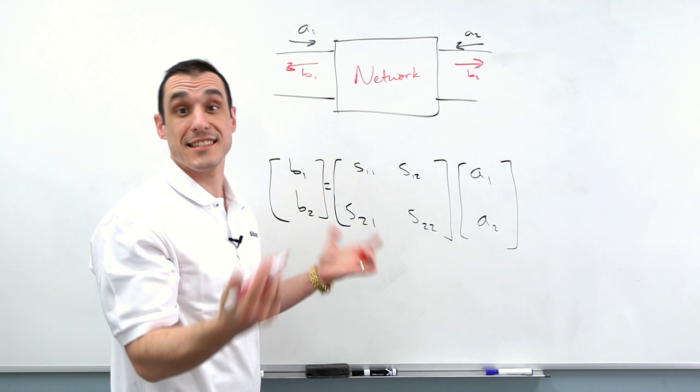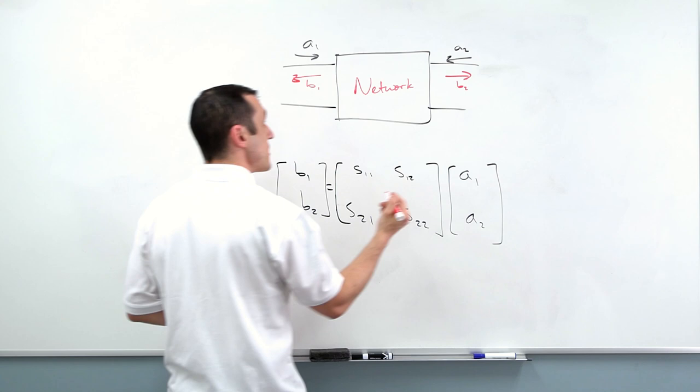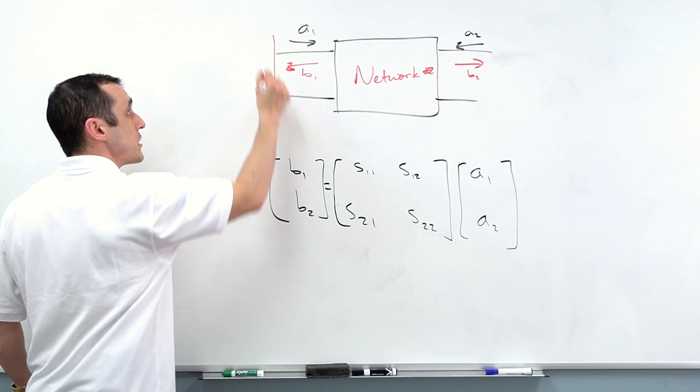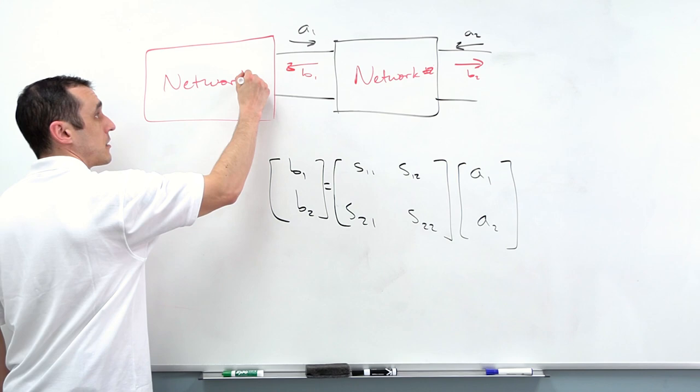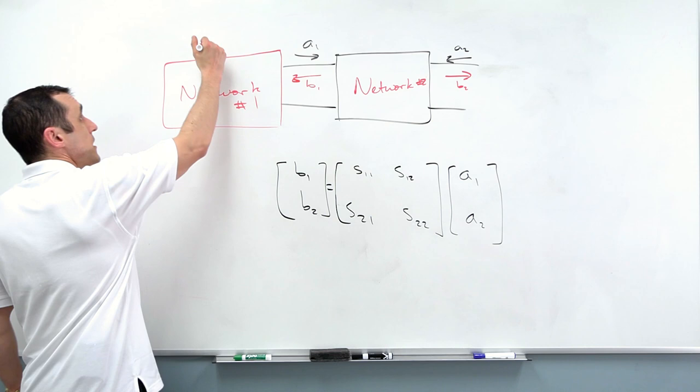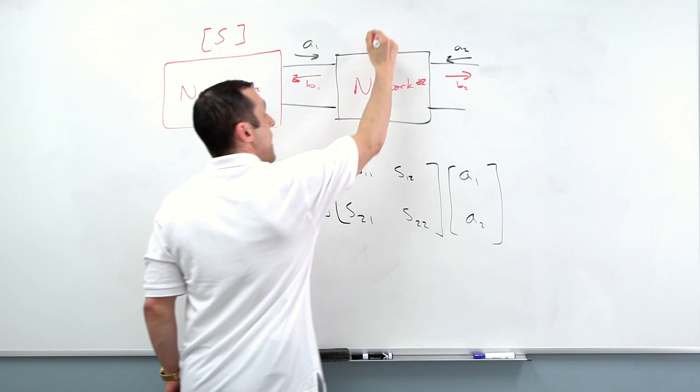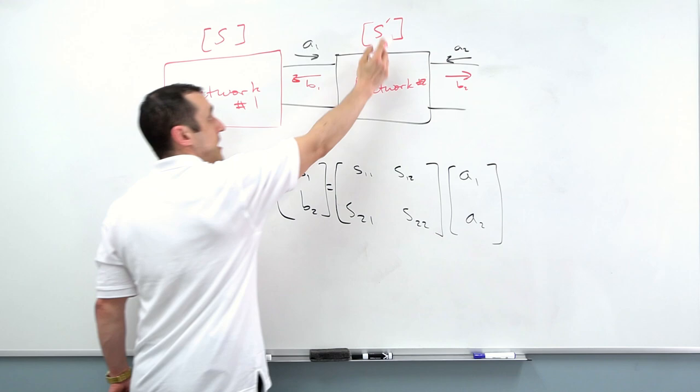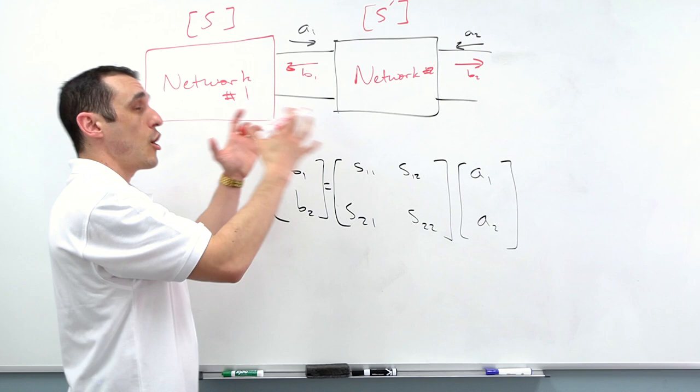Let's suppose for a moment that this is my network number two. Let's say I have another network over here and this is network number one. How do the S-Parameters of these two networks combine to give us an equivalent set of S-Parameters? Now remember, this thing is going to have its own set of S-Parameters and this thing is also going to have its own set of S-Parameters. We'll call this S and then S-Prime. How do these two sets of parameters combine to give me a total S-Parameter matrix for this network?